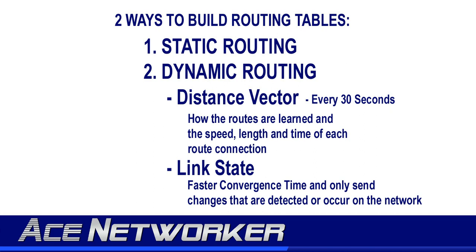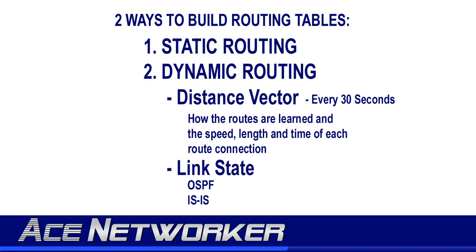As soon as a network drops or is added using link state protocols, a link state advertisement — better known as an LSA — is sent out to all the other routers to let them know. Each router then makes the proper updates to their respective routing table. The second major advantage to link state protocols is convergence time, which is much faster than distance vector protocols — often within just a few seconds, compared to every 30 seconds with distance vector. Since routers using link state protocols hear about route updates almost as soon as they occur, and hear it directly from the router that owns the network, convergence is very fast. Examples of link state routing protocols are OSPF and IS-IS.